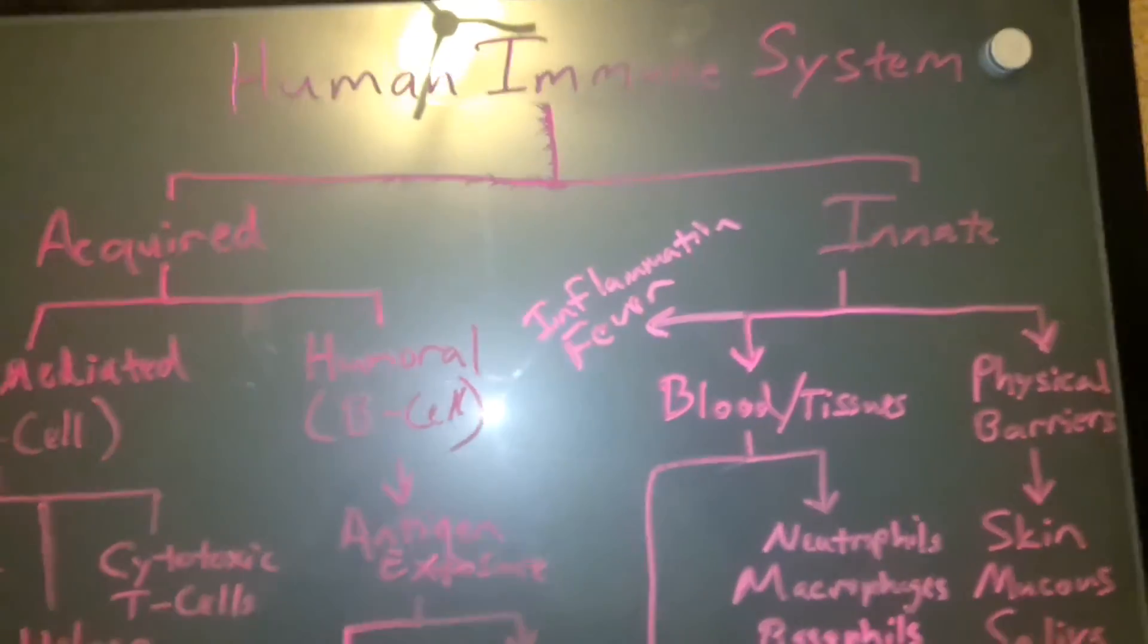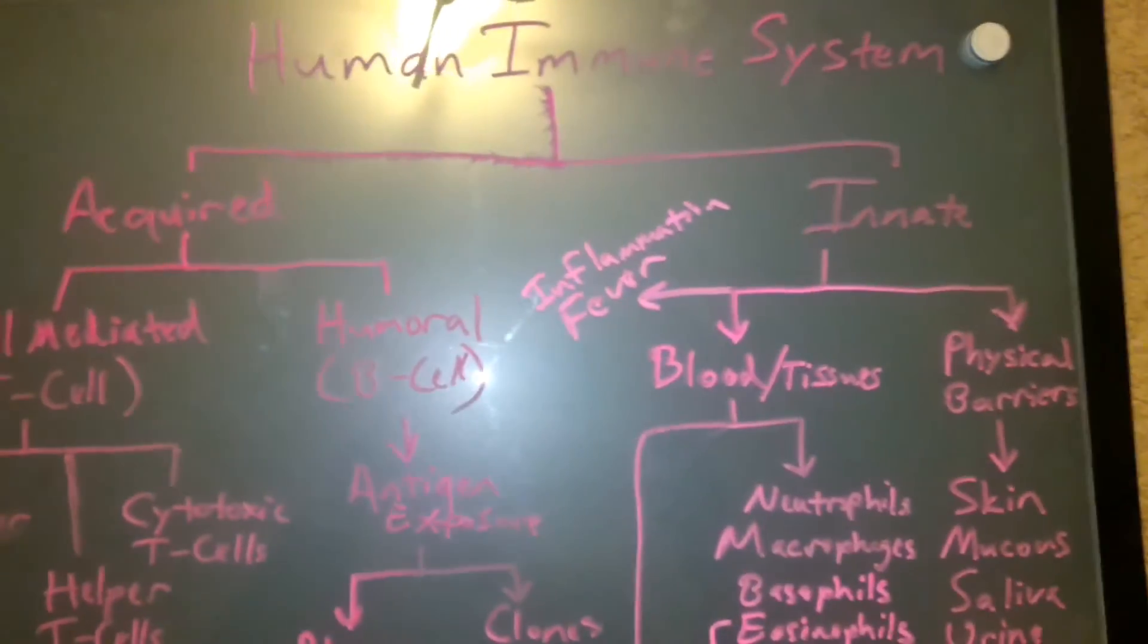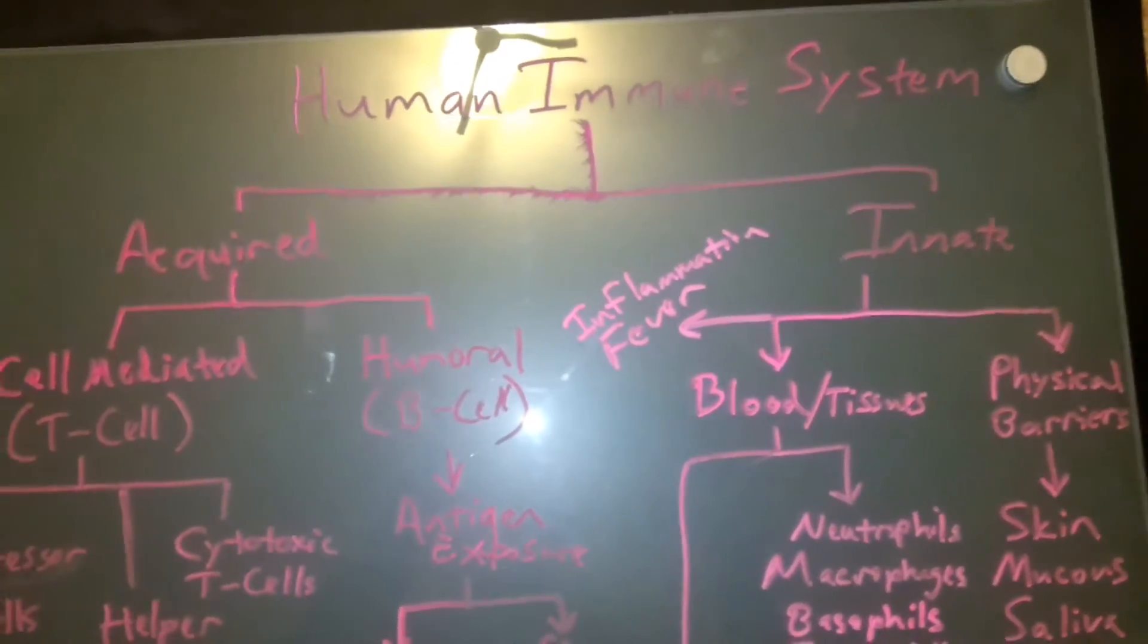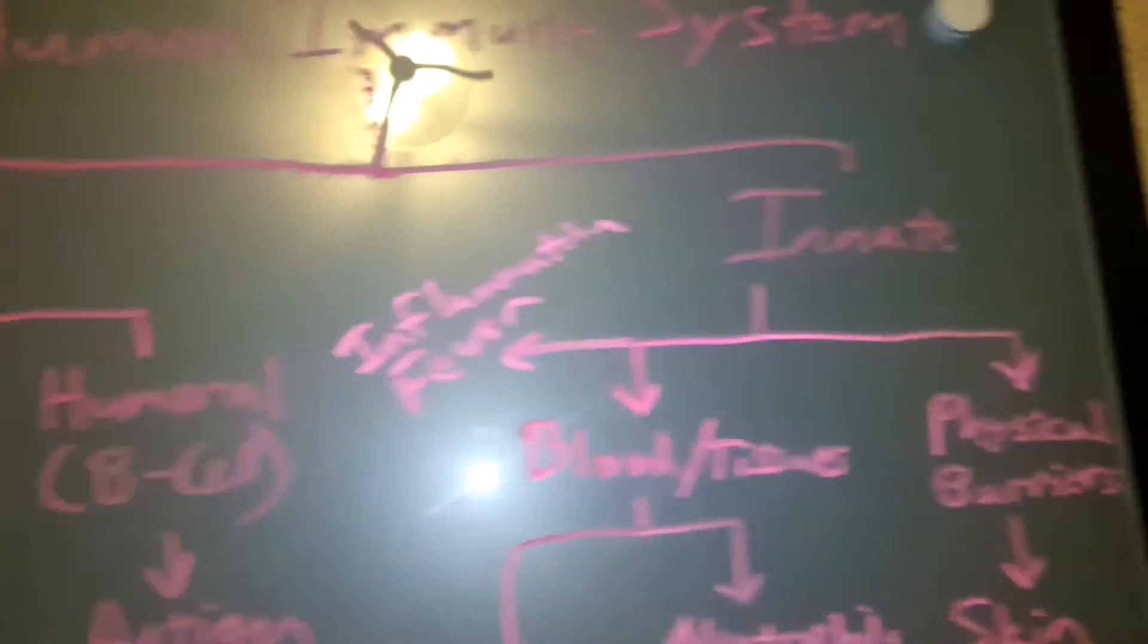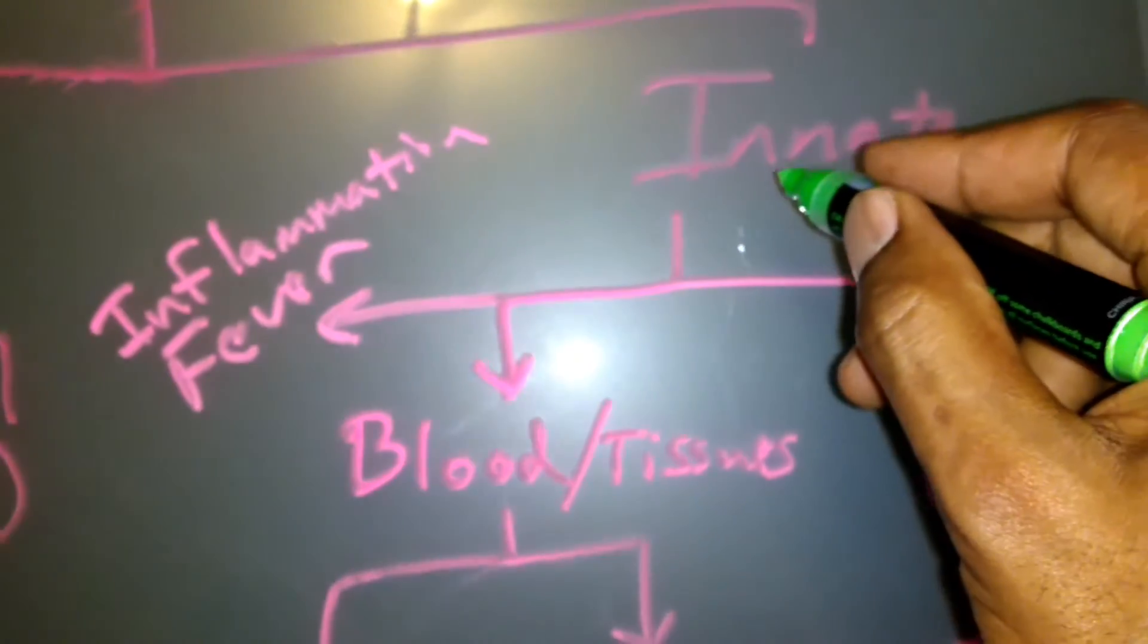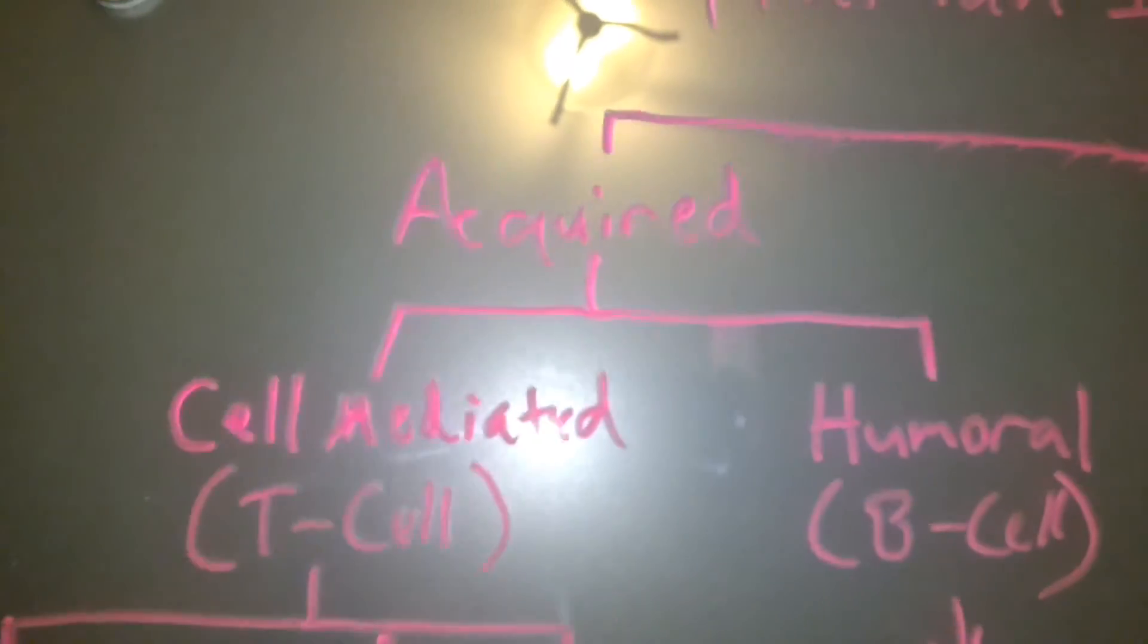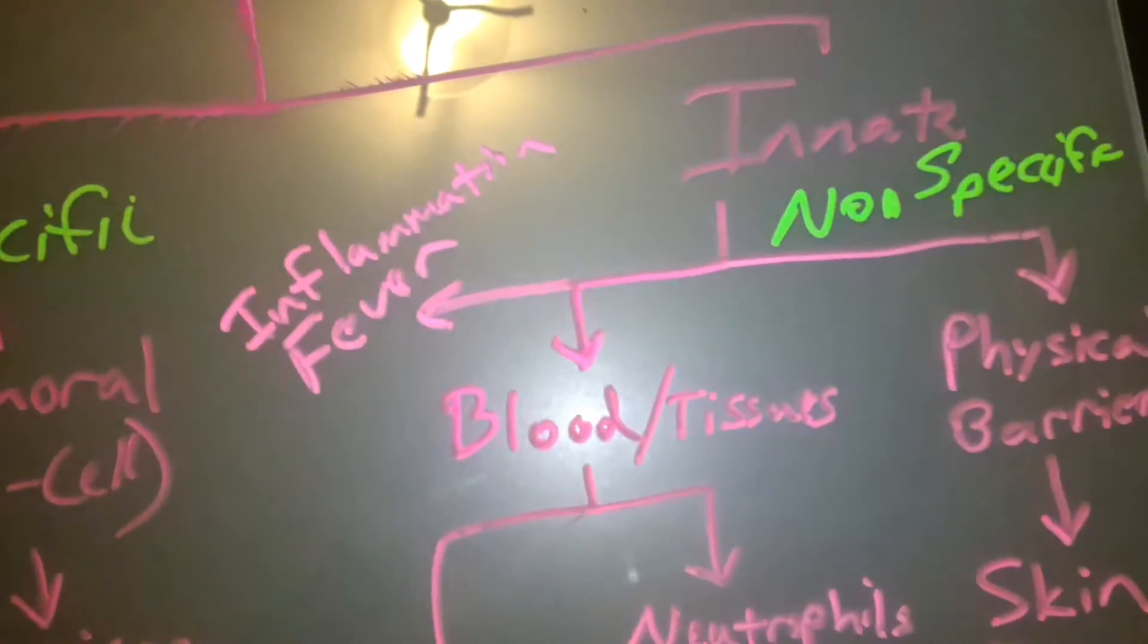When it comes to the immune system, the human immune system, one of the things you got to remember is this is your defense mechanism for working specifically with two different things: when the body is fighting pathogens and when it's dealing with damaged tissue. With the immune system, there's two parts to it - there's the innate immune system, and then there is the acquired immune system. Some people refer to the innate immune system as the non-specific, and the acquired immune system is also known as the specific.